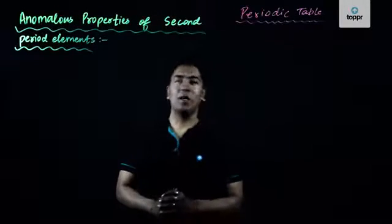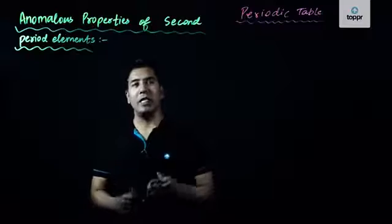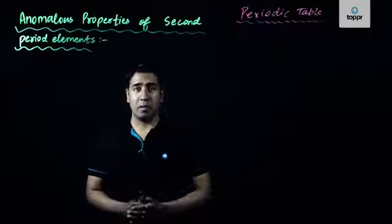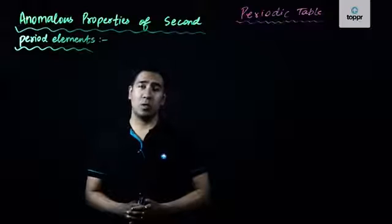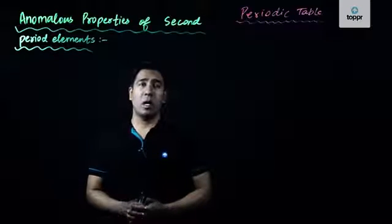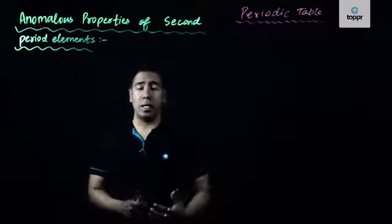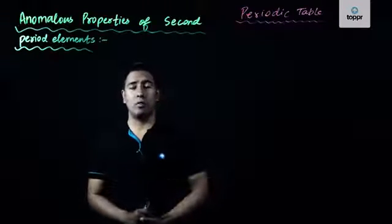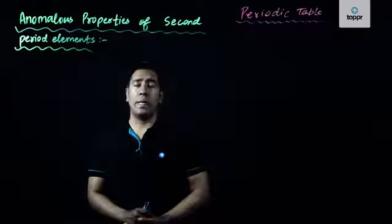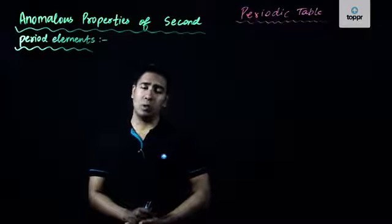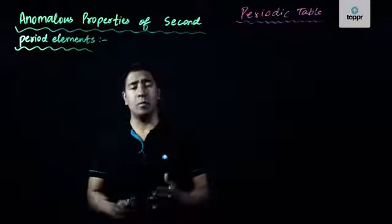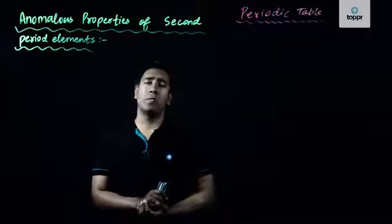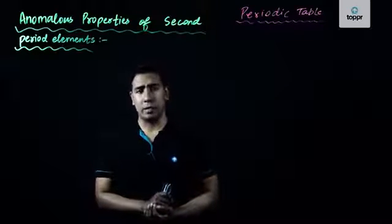Friends, right now we are going to study the anomalous behavior of the second period elements, which are also called as representative elements, and the other elements belonging to the other periods of the periodic table. There is a reason behind the anomalous behavior, but before going to the reason, let us first look at what the anomalous behavior is.